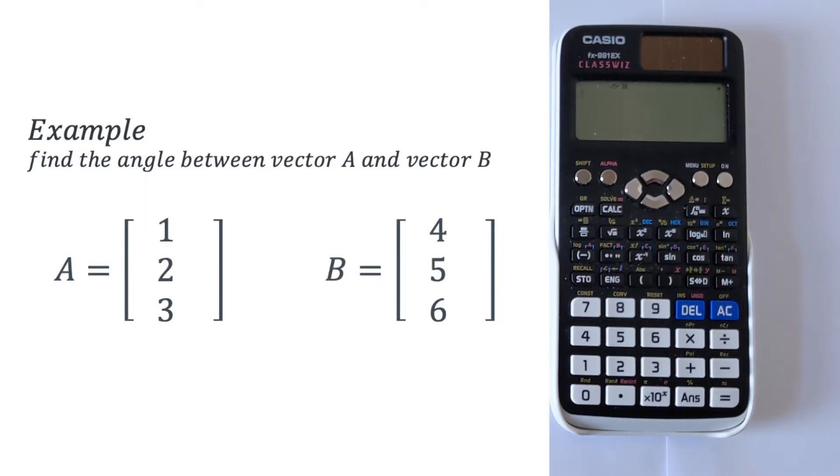So we've got vector A and vector B. Vector A is simply 1, 2, 3, and vector B is 4, 5, 6. We want to find the angle between these two vectors.